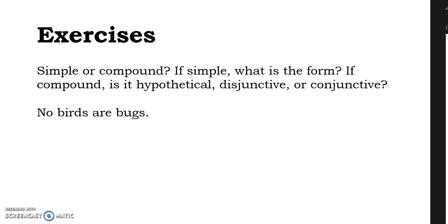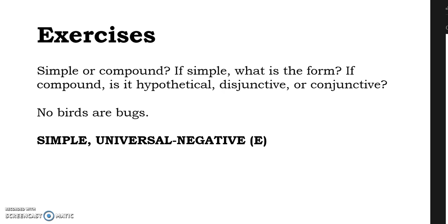'No birds are bugs.' Simple or compound? We can see that we have only two terms — birds and bugs — and the compound proposition always has more than two terms, so it looks like a simple proposition. We have 'no' at the beginning, so let's consider quality and quantity. Quality: is this affirmative or negative? It's negative. Quantity: are we talking about the whole class of birds or just part? The whole class — so it's both universal and negative. The universal negative is the E proposition. So we have a simple universal negative proposition, also known as an E proposition.